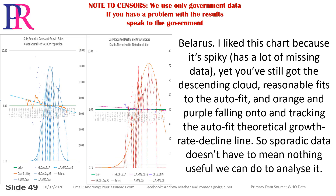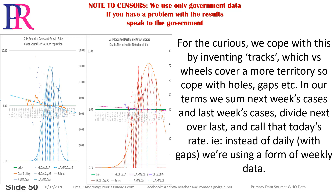Belarus — I like this chart because it's spiky, has a lot of missing data. Yet you've still got the descending cloud, reasonable fits the autofit, and orange and purple falling onto and tracking the autofit theoretical growth rate decline line. So sporadic data doesn't have to mean there's nothing useful we can do to analyse it.